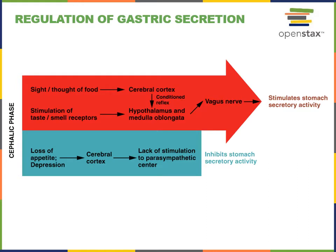Gastric juice secretion is stimulated in the cephalic phase by an extrinsic control mechanism, where the sight, thought, taste, or smell of food is processed by the brain and stimulates control centers in the hypothalamus and medulla oblongata. These centers activate the parasympathetic efferent fibers traveling through the vagus nerve, which stimulate the release of acetylcholine in the stomach to increase the secretion of gastric juice.